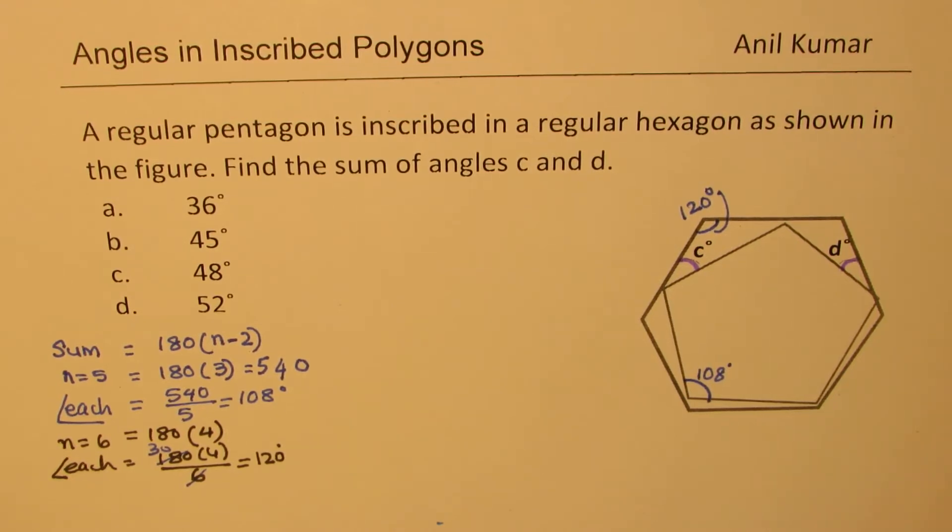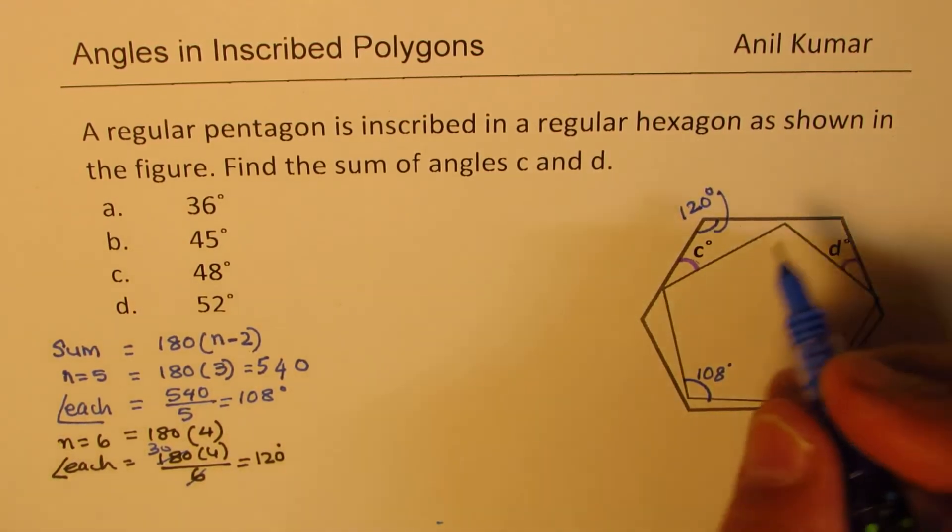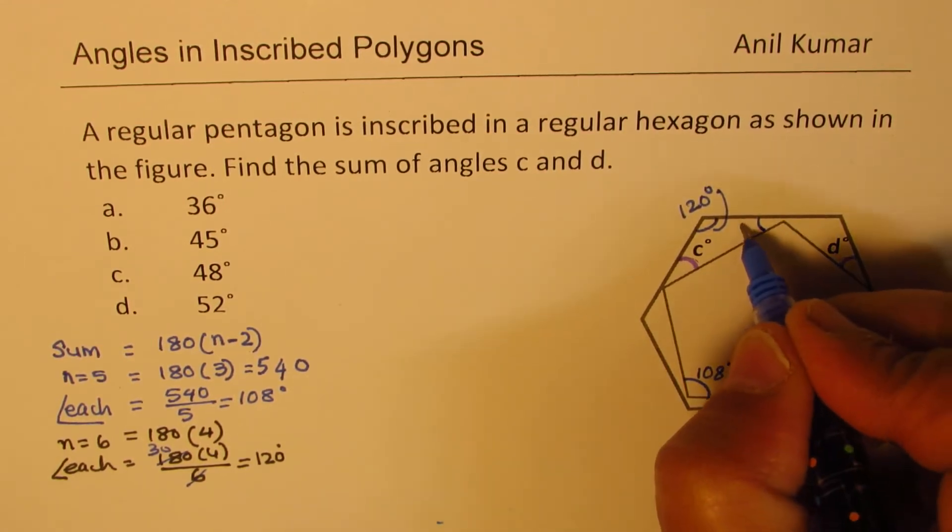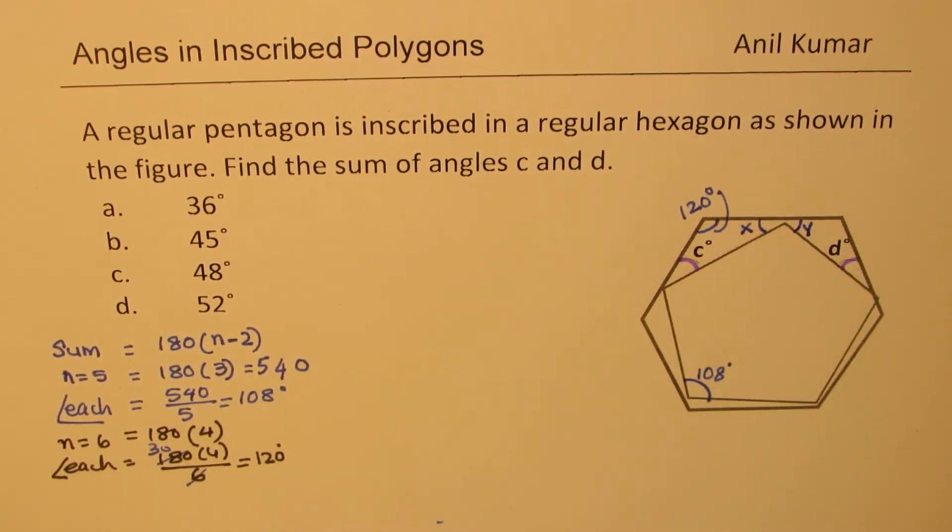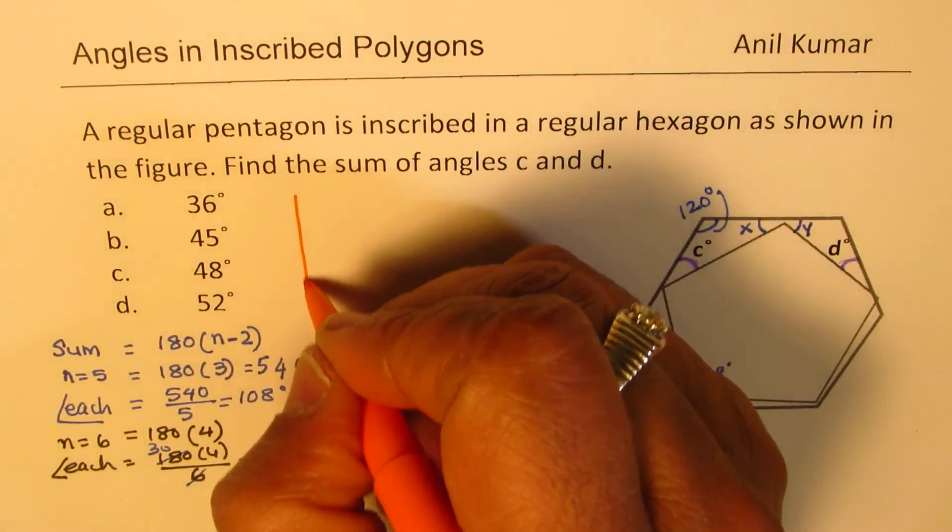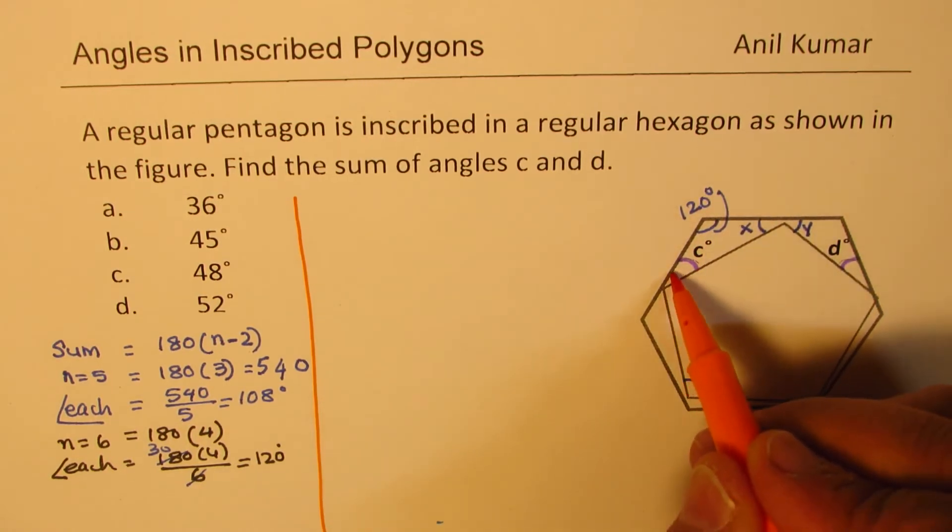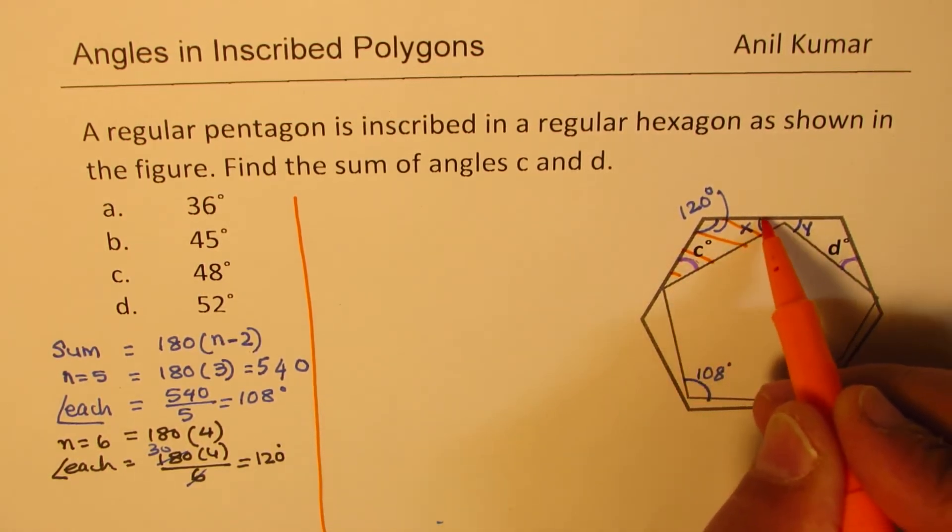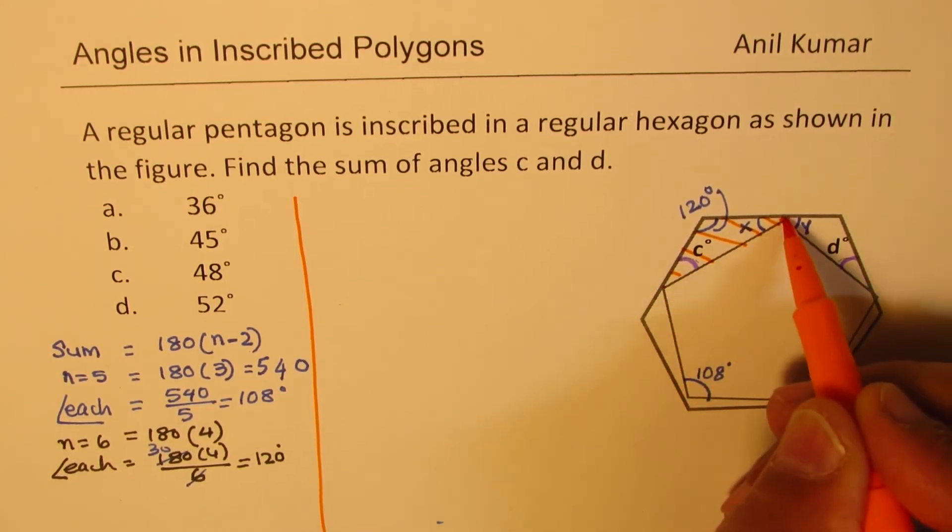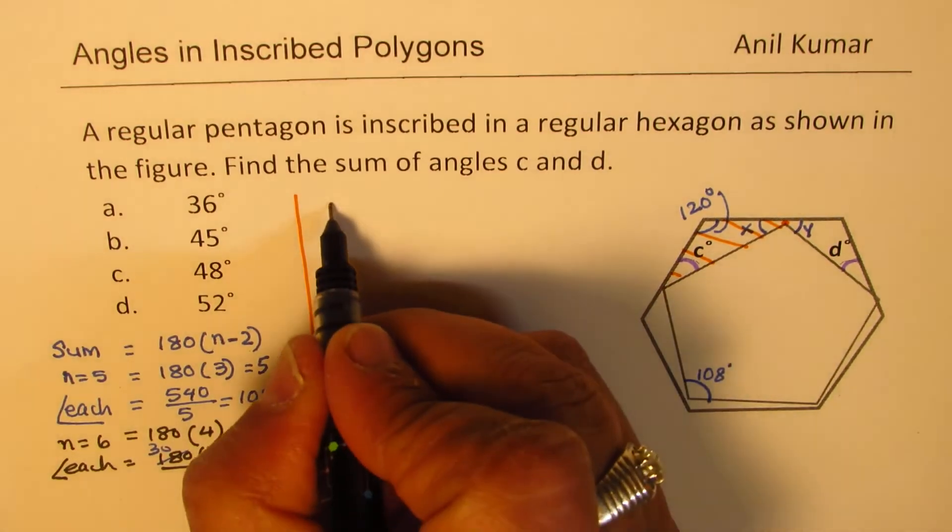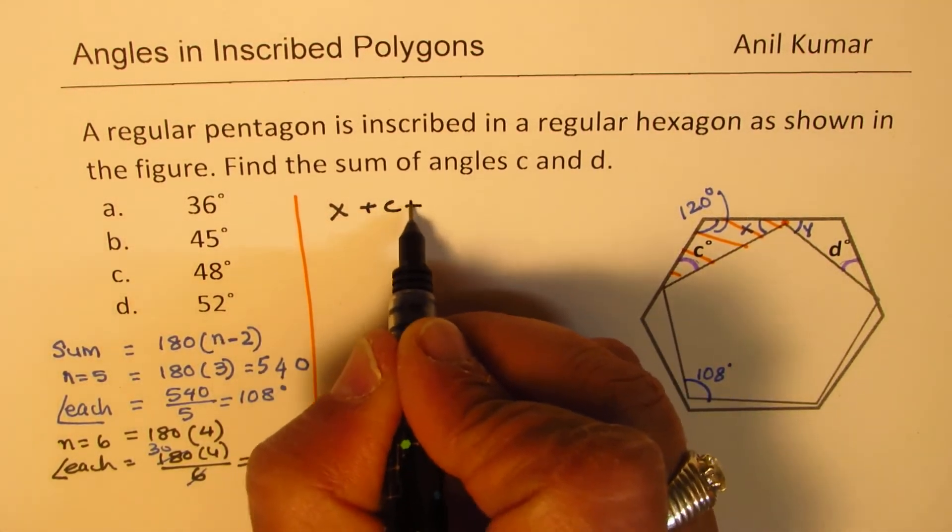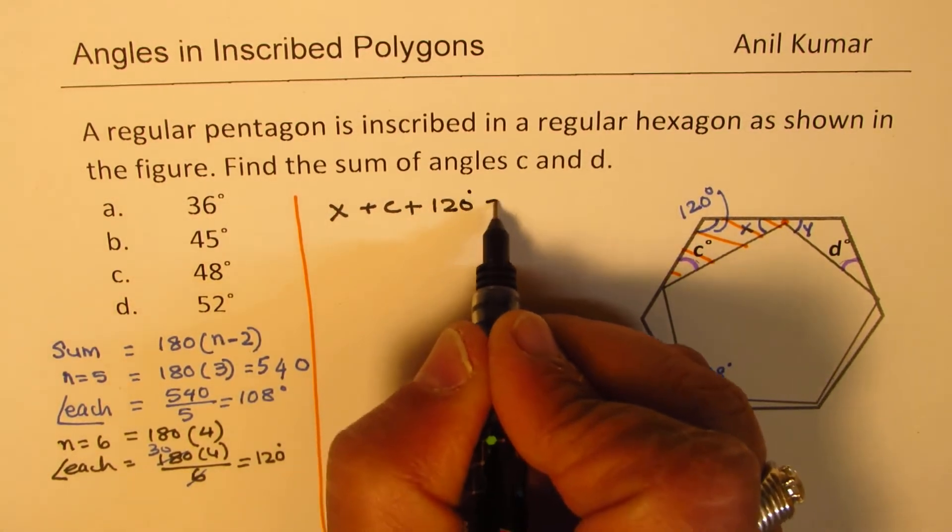Now to find this angle, let's do some more construction. Let us assume that this angle here is X and the angle on the other side is Y. Now we can actually consider the triangles. So let's consider this particular triangle. So this is on the pentagon and vertex of pentagon is on the hexagon.